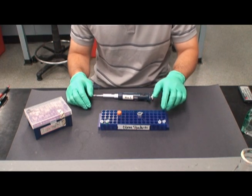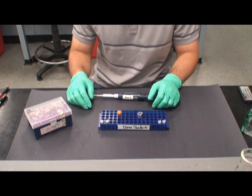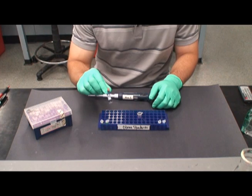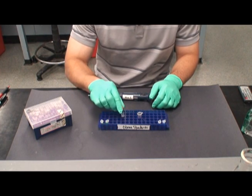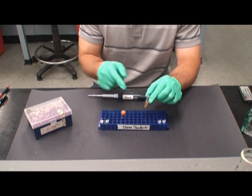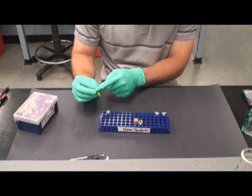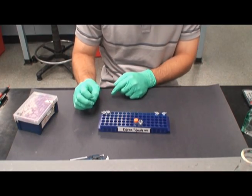Here we have the four microfuge tubes that have been incubated. To each tube, aseptically add 3 microliters of 10x loading buffer and 2 microliters of CyberGreen. A brief centrifuge will ensure that all the liquid gets to the bottom of the tube.